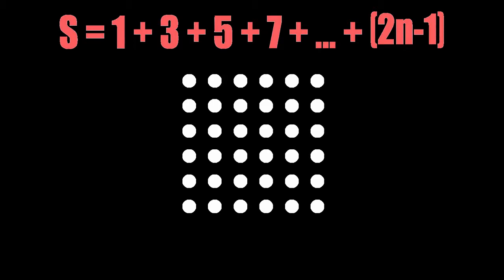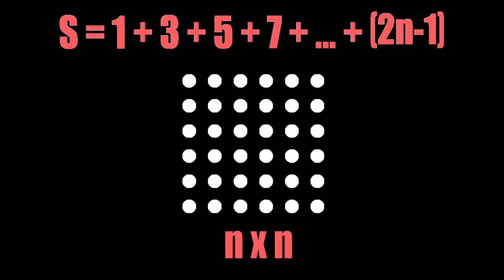Suffice to say that when we have n terms in the sequence, our dots will form a square of side length n. Or, to put it another way, the total number of dots, and therefore the sum of the odd integers up to the nth term, is equal to n squared. So here we have used very little maths, and just a picture, to arrive at a mathematical result which is certainly unobvious.